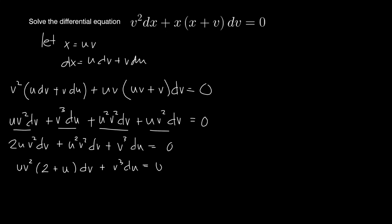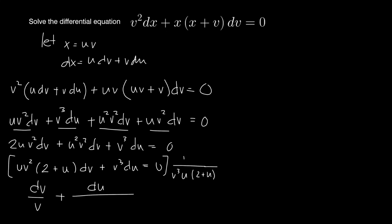We now have an equation that is separable. By separation of variables, we multiply the equation by 1/(v³ · u(2 + u)). The first term becomes dv/v, and the second term becomes du/(u(2 + u)) = 0.